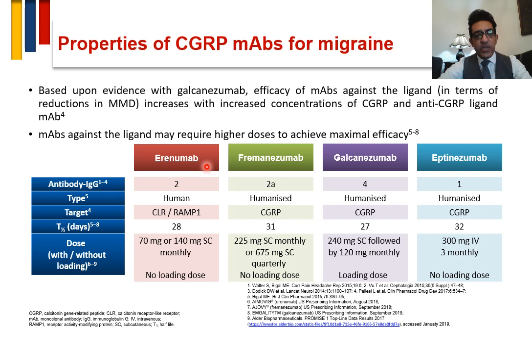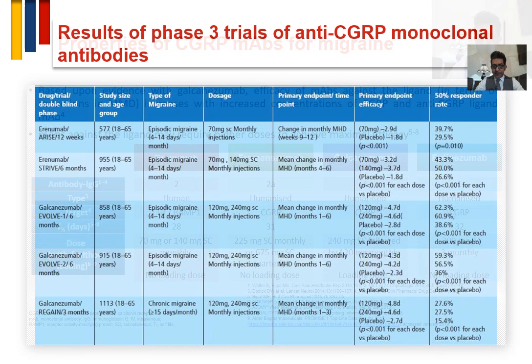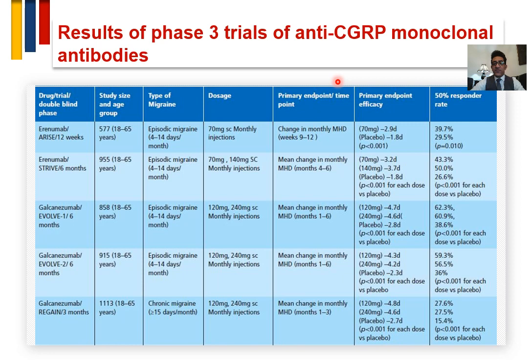There are many monoclonal antibodies available: erenumab, fremanezumab, galcanezumab, and eptinezumab. The main difference is that erenumab works on the CGRP receptor itself — specifically the CLR and RAMP1 components — while the other agents work on the ligand itself, not the receptor. These trials of anti-CGRP monoclonal antibodies have shown significant results.